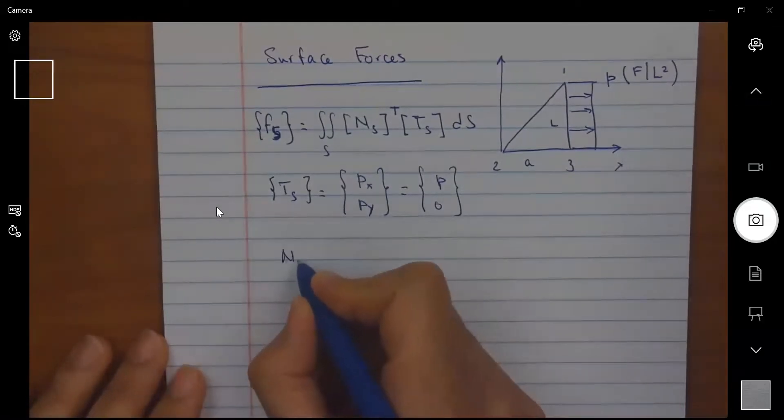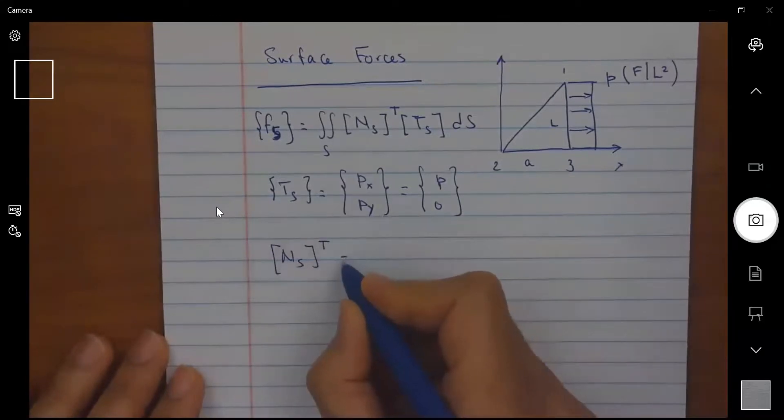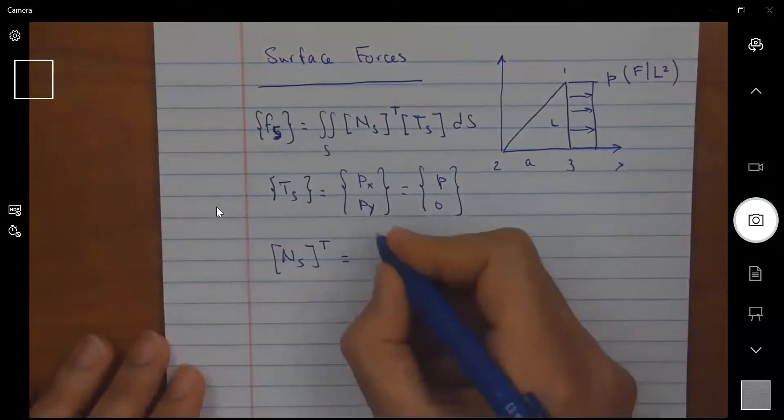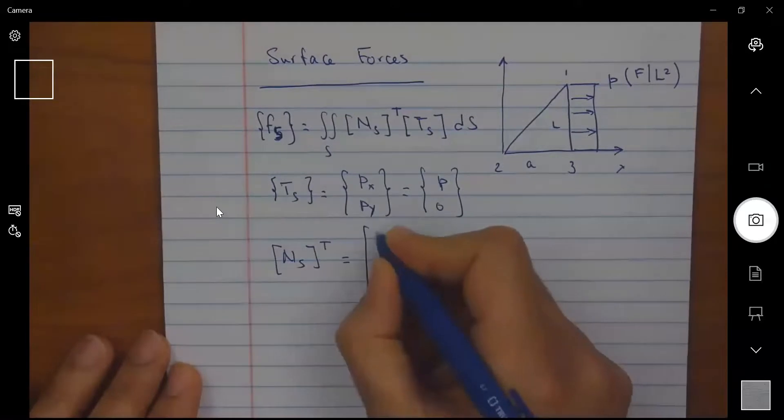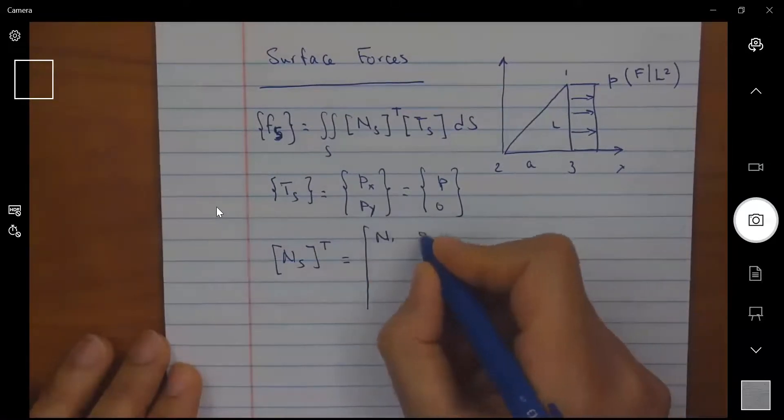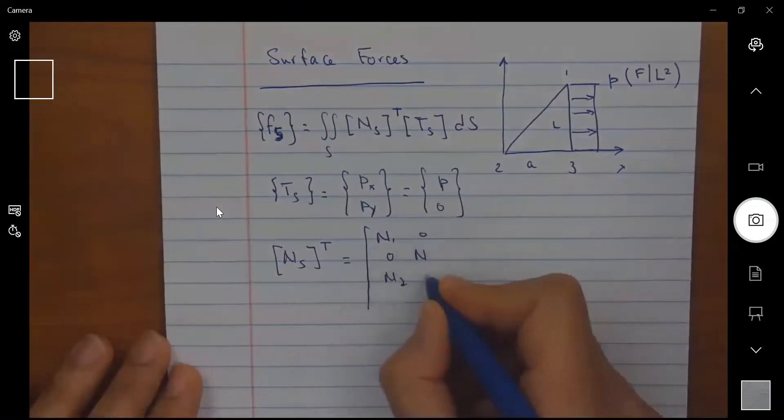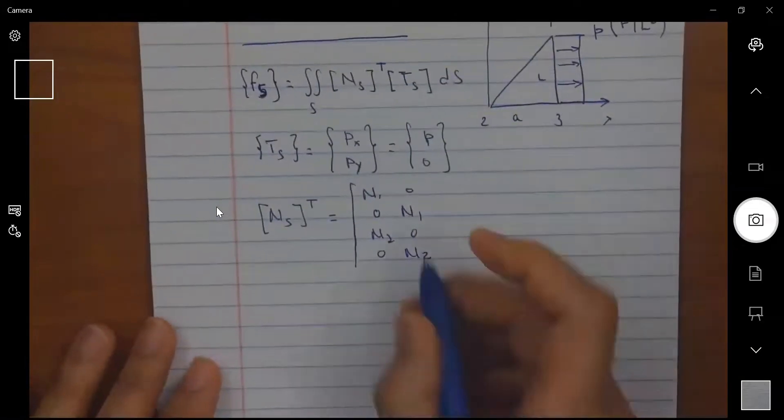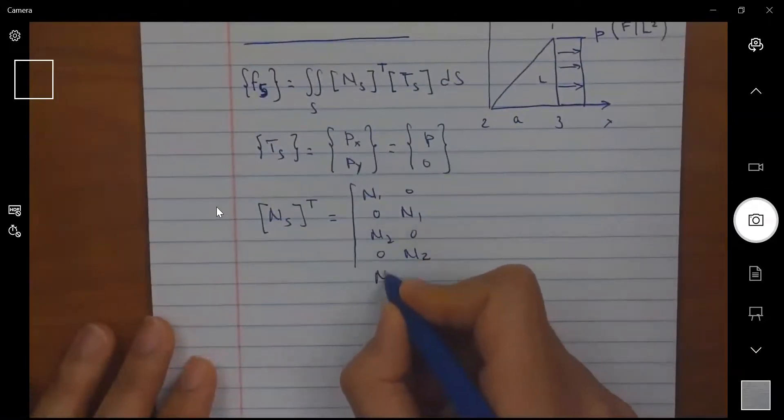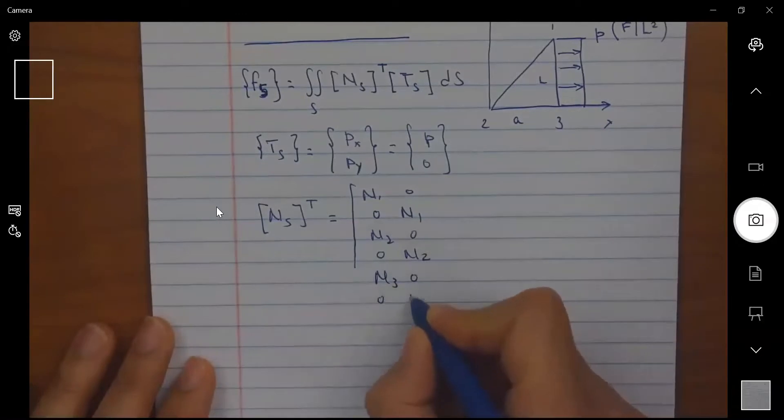Now, N S transpose would be equal to N one, zero, N one, zero, zero, zero N one, N two, zero, zero, N two, and N three, zero, zero, N three.